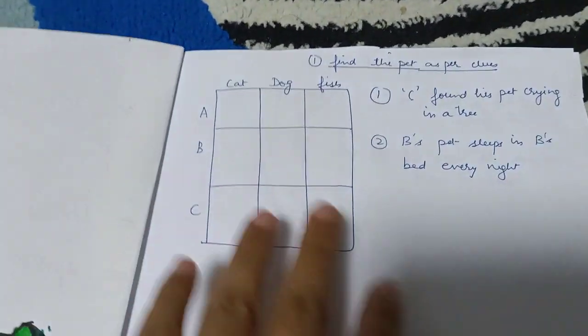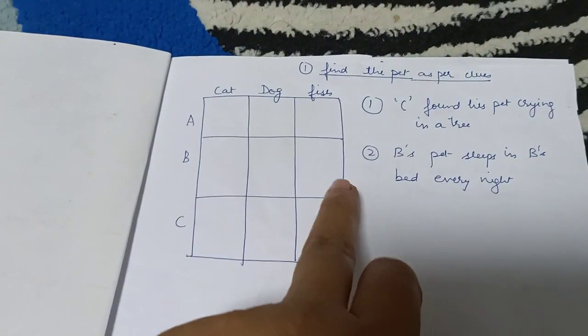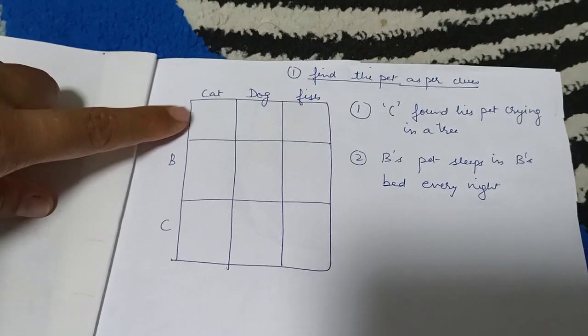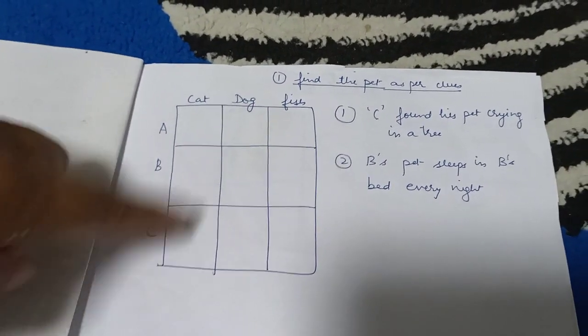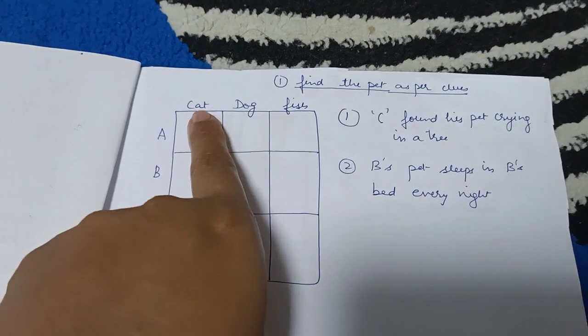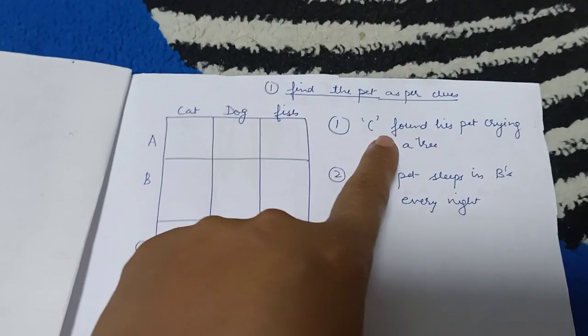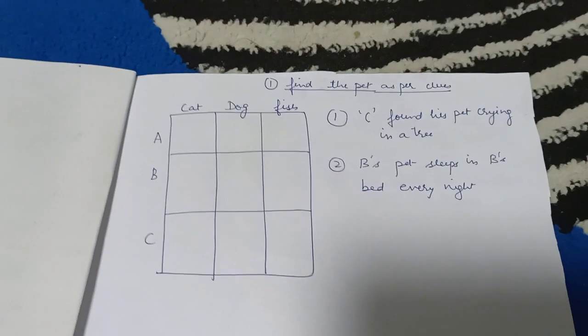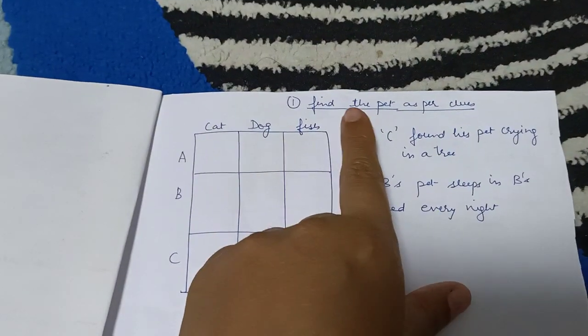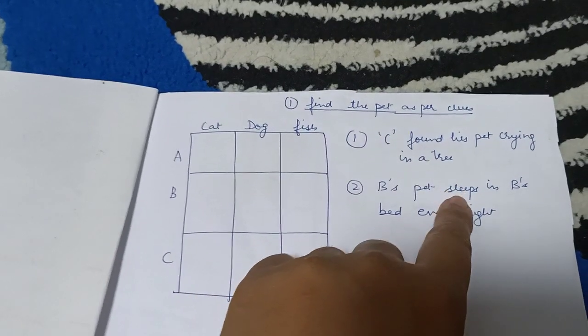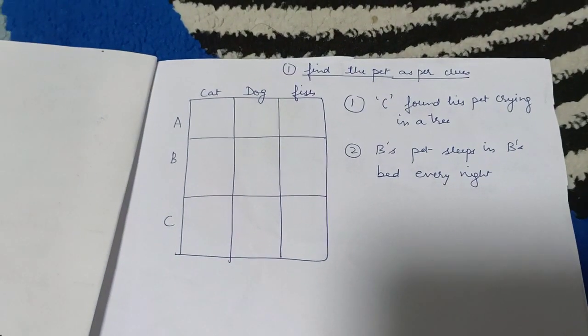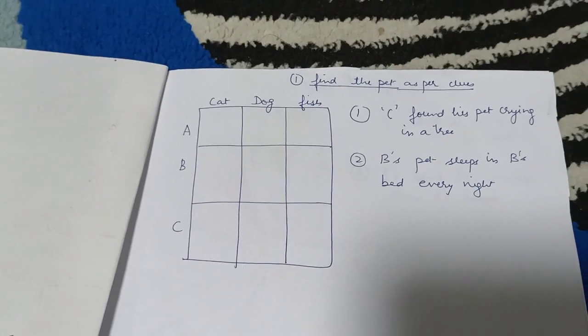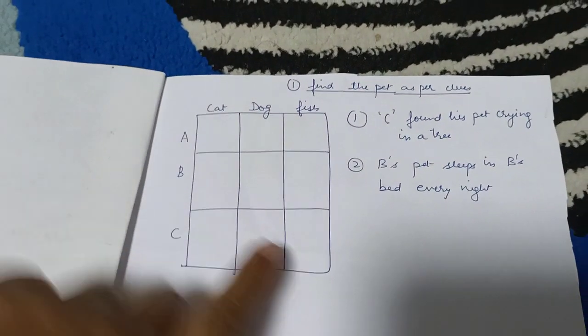Here you have to find the pet of each person as per the clues. There are three people: A, B, and C, and there are three pets: a cat, a dog, and a fish. I have given the clues. According to the clues, you have to figure out who has which pet. The first clue is C found his pet crying in the tree. So what does it mean? Can it be a fish? No. Can it be a dog or can it be a cat? So C does not have a fish as a pet.